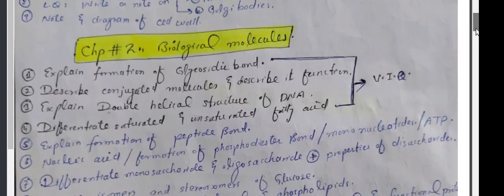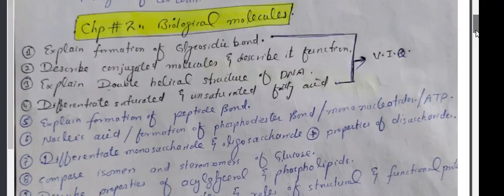Chapter 2, Biological Molecules. Explain formation of glycosidic bond. Describe conjugated molecules and describe its function. Explain double helical structure of DNA. Differentiate between saturated and unsaturated fatty acids. Explain formation of peptide bond. Nucleic acid formation of phosphodiester bond. Mononucleic acid formation of nucleotides or ATP.